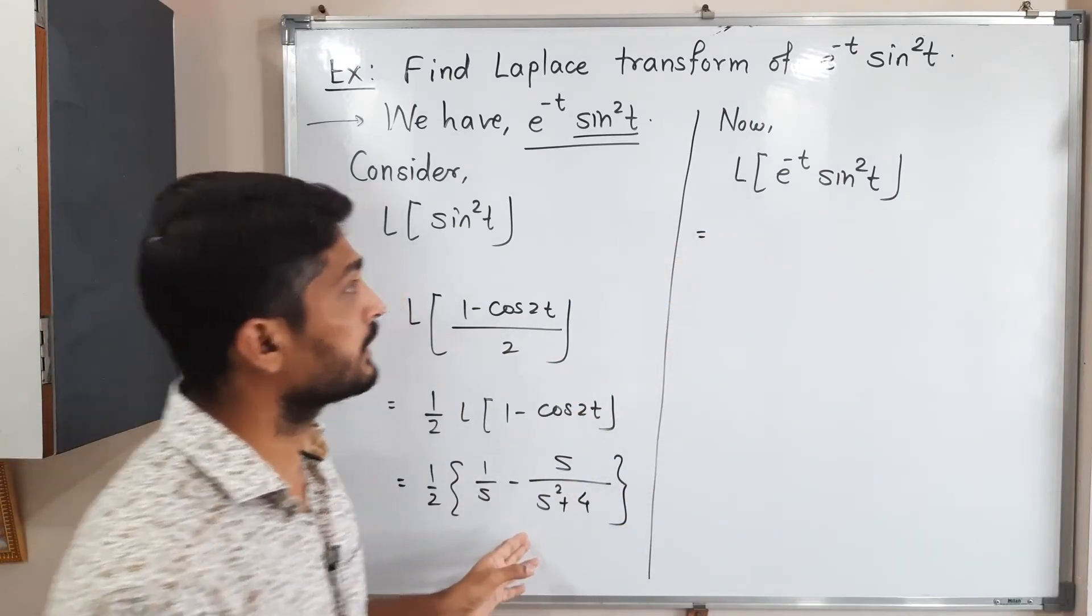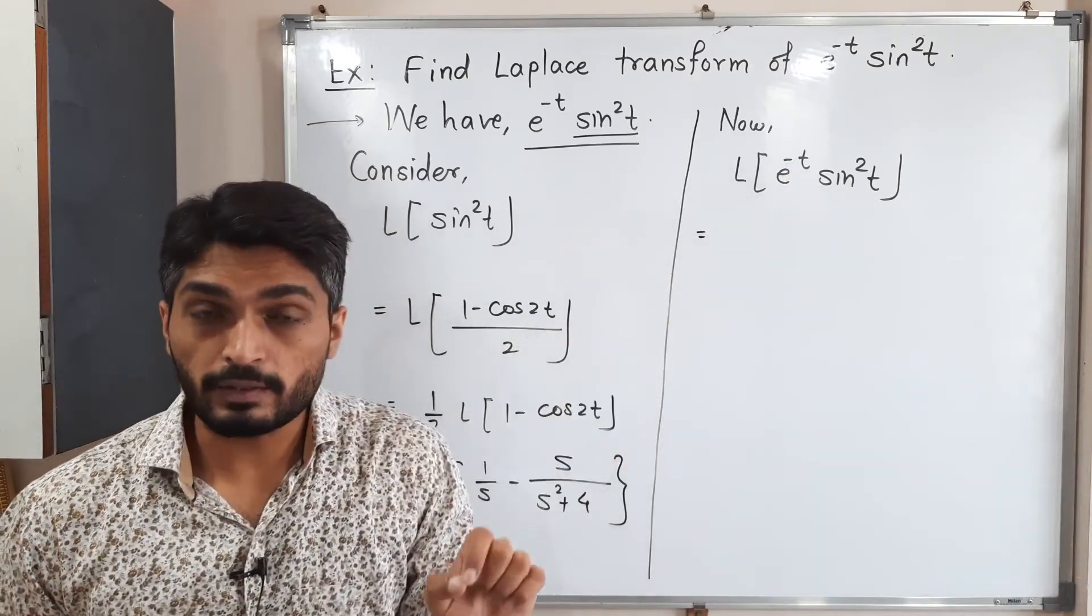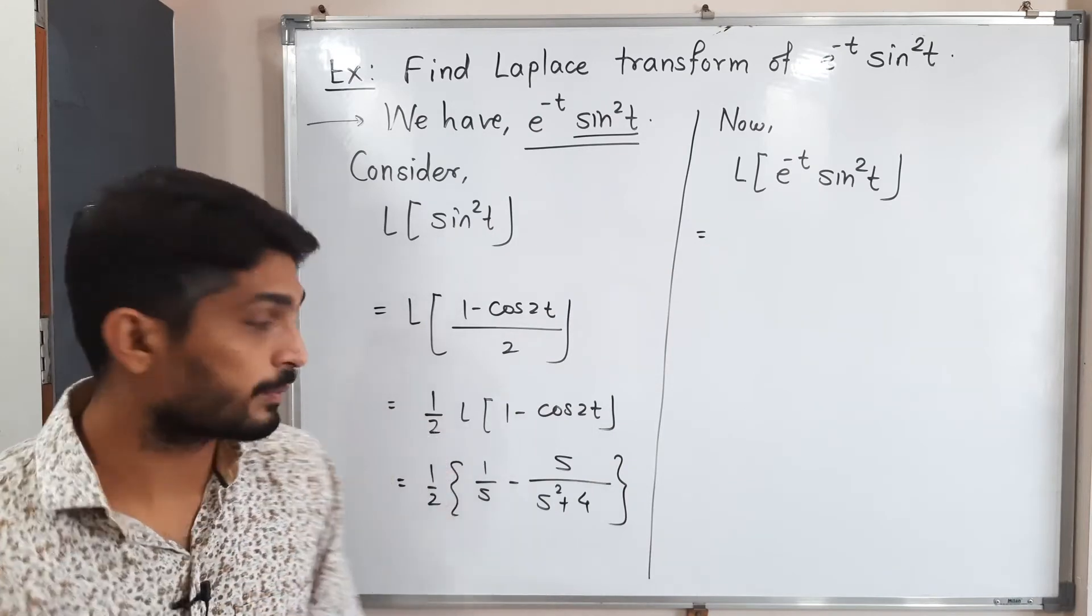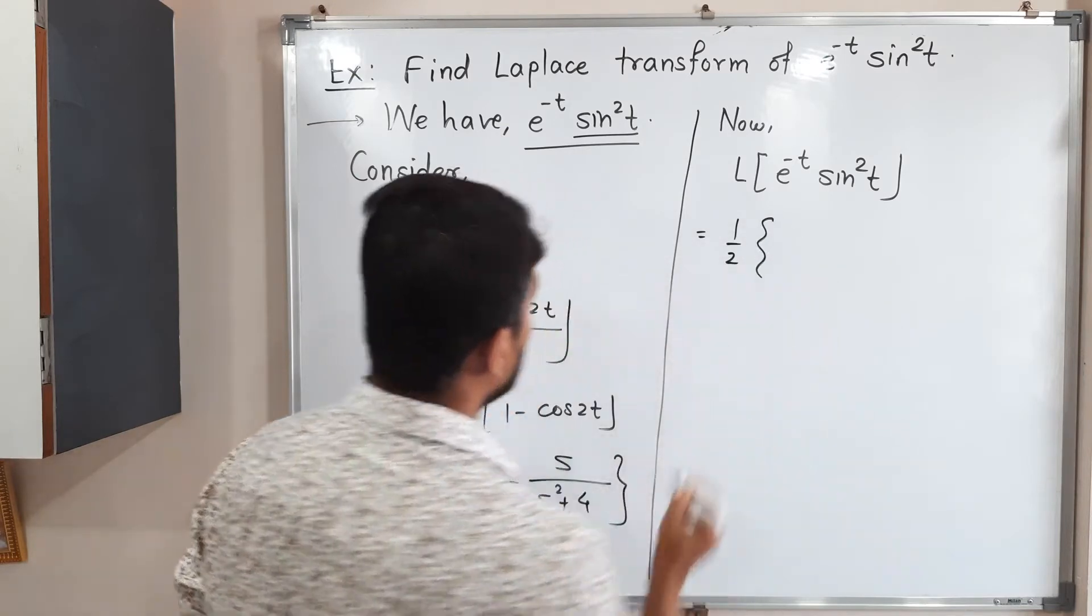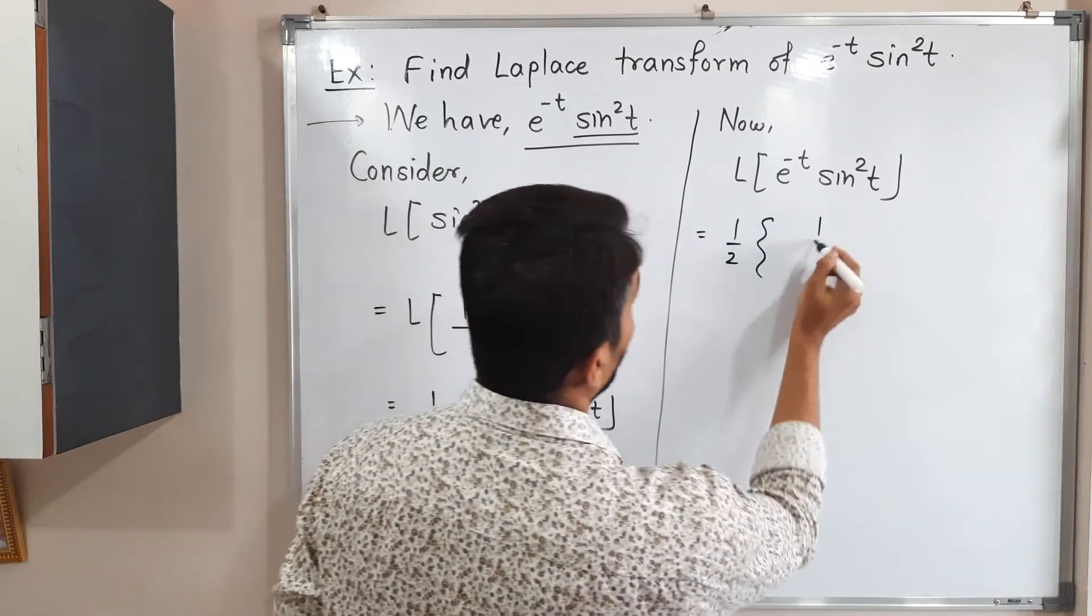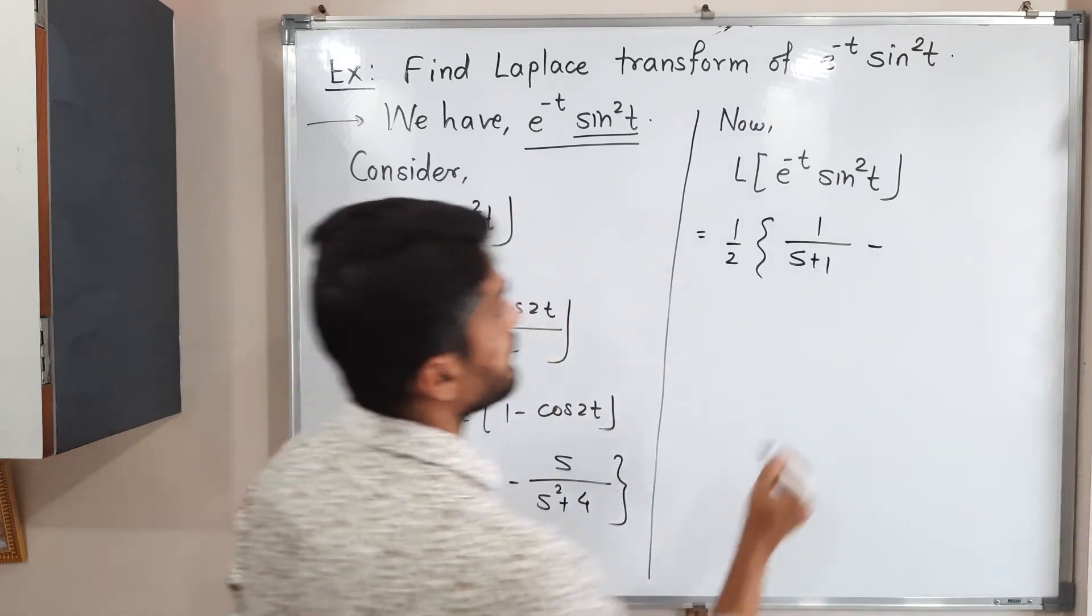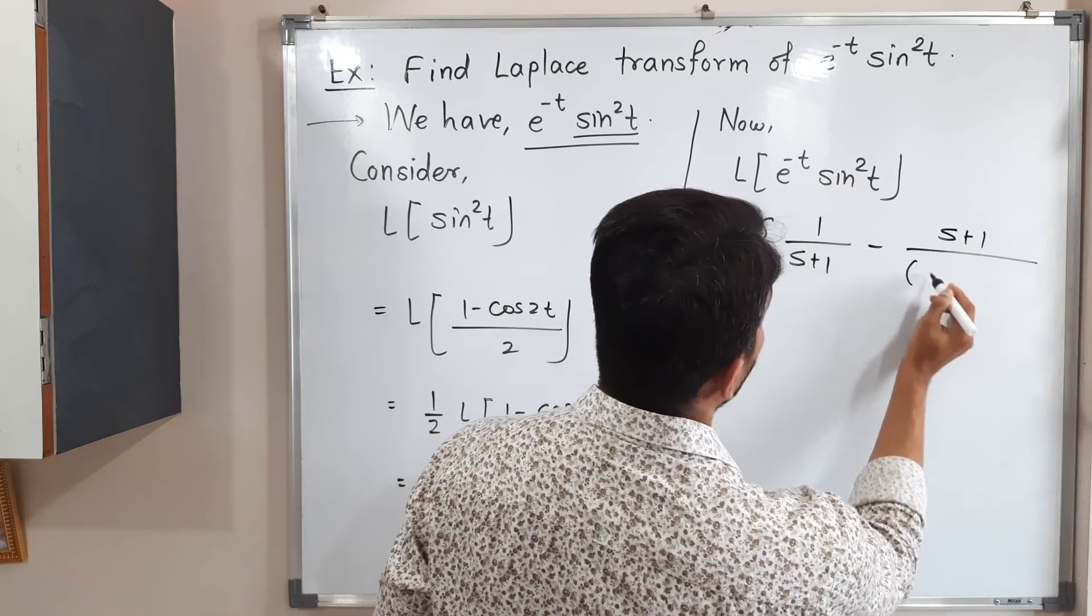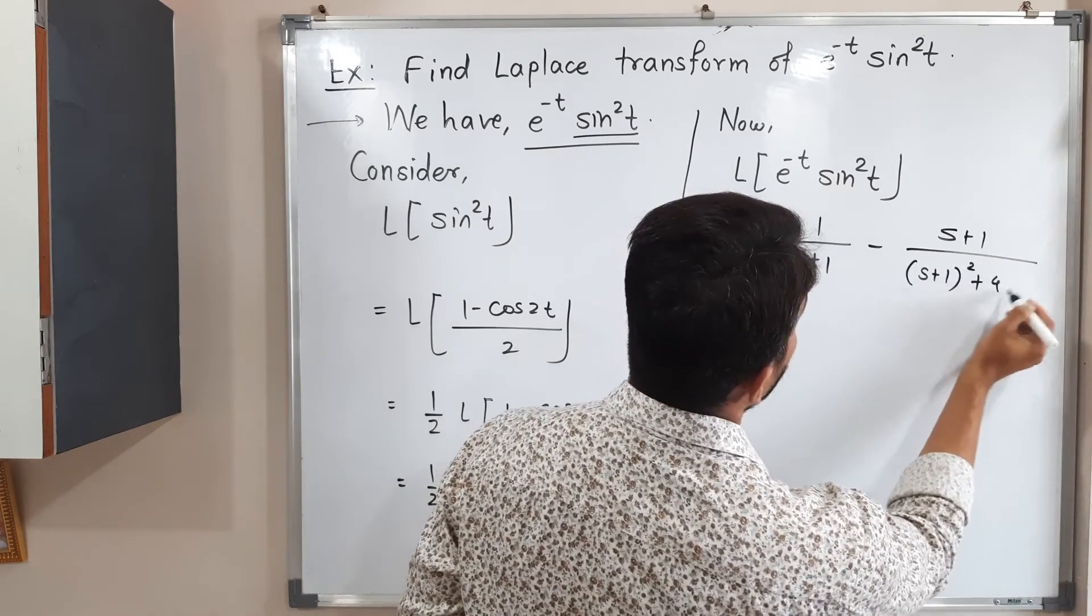So first shifting theorem says we have to replace s by s plus one since multiple of t is minus one. So that's why we have to replace s by s plus one. Let us see what will happen. So this is equal to one by two. I am replacing s by s plus one. So one upon s plus one minus here also I will replace s plus one. So wherever you see s you have to replace it by s plus one.